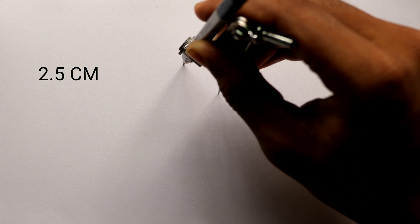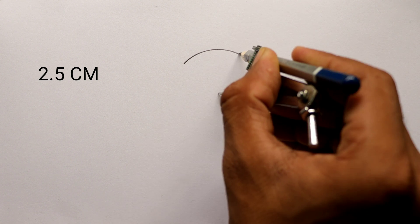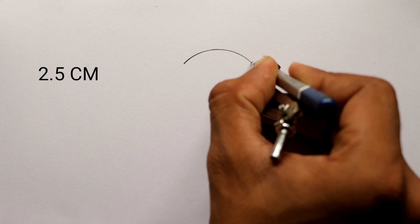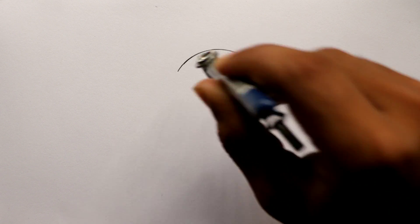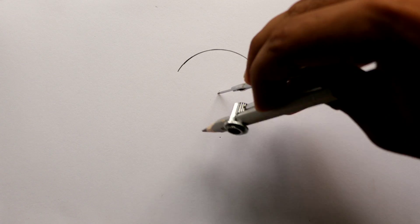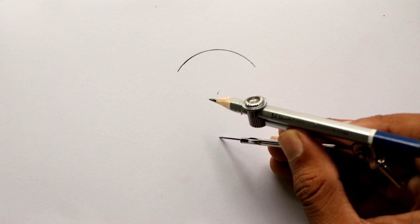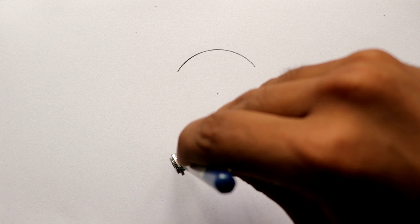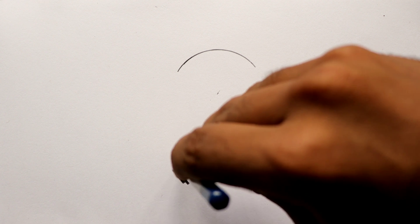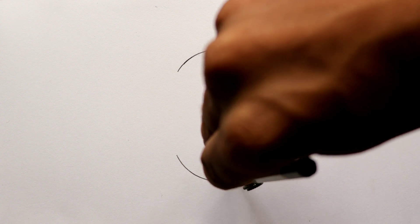First of all, we will take 2.5 cm and draw the first arc like this. After that, we will draw another arc downward. So first we take a distance of 2.5 cm and then make the arc here.